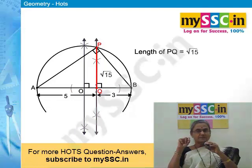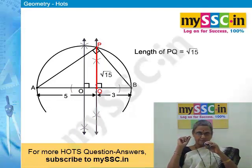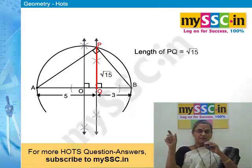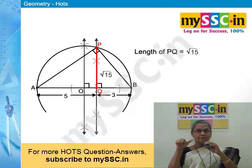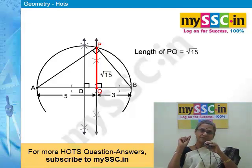Therefore, PQ length will be √15. Here we are using the geometric mean property: AQ = 5, BQ = 3, and PQ is the perpendicular from the vertex to the hypotenuse. So the length of segment PQ is √15.